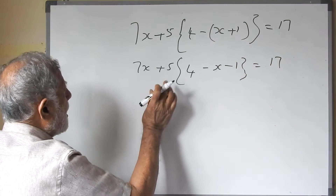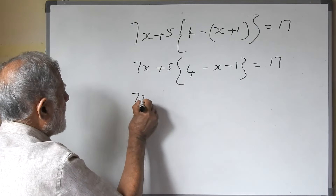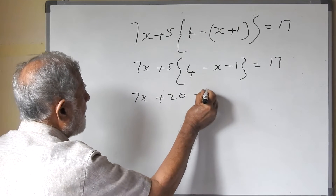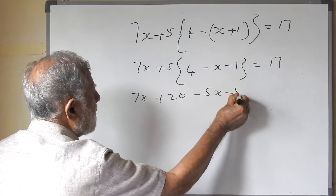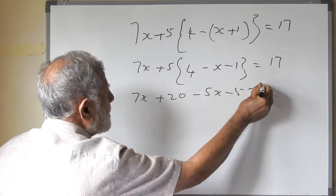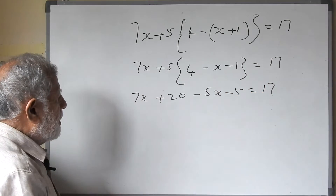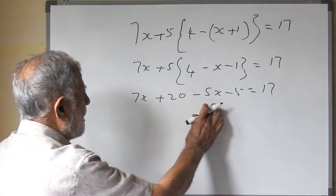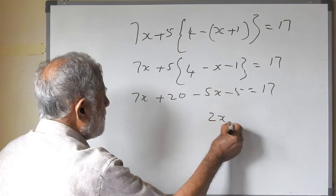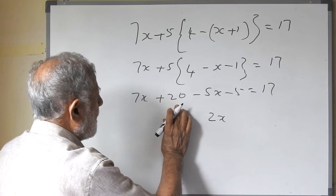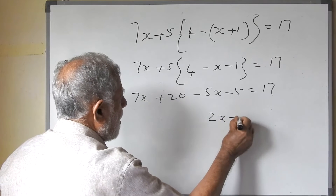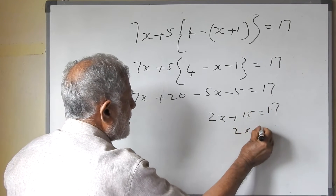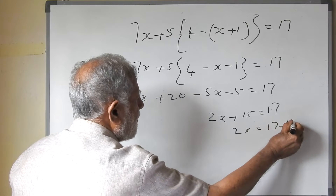And again we will remove the bracket by multiplying by 5. So 7x plus 20 minus 5x minus 5 equals 17. So now we simplify and we get 7x minus 5x is 2x, and 20 minus 5 is 15.